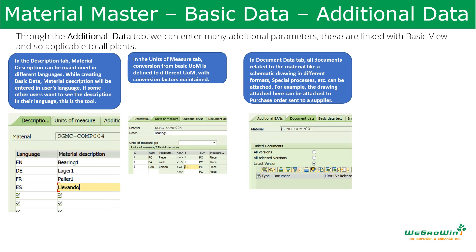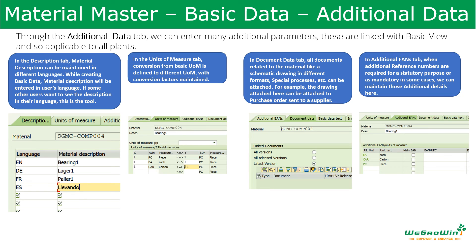In the document tab, any required documents can be maintained with version details to ensure the latest version is tracked. More than one document can be attached, and these documents can be automatically attached when releasing a purchase order to suppliers. This ensures that the production order or purchase order is always linked to the updated drawing, helping the person doing the job work with the most current version. EAN codes used in different countries can also be maintained here with respect to different units of measurement.